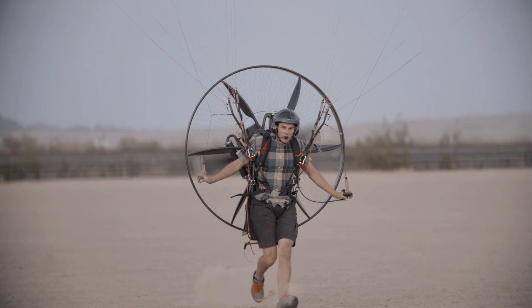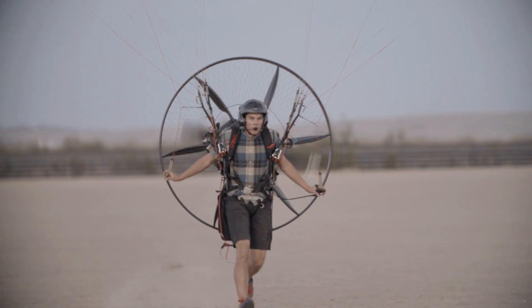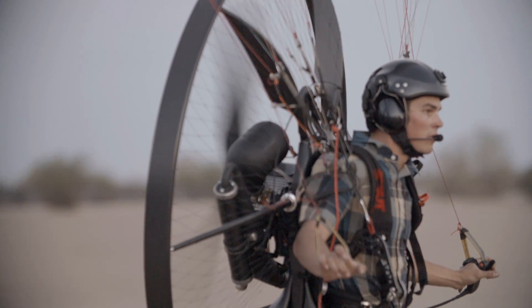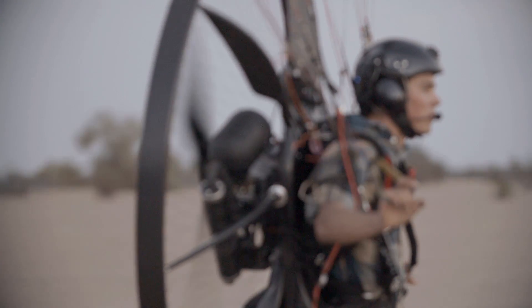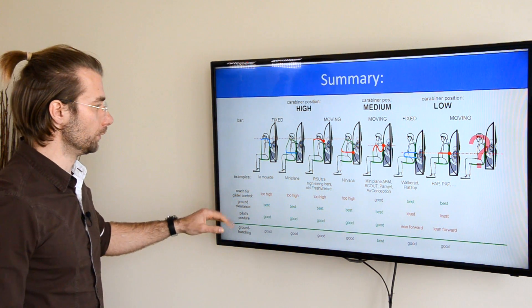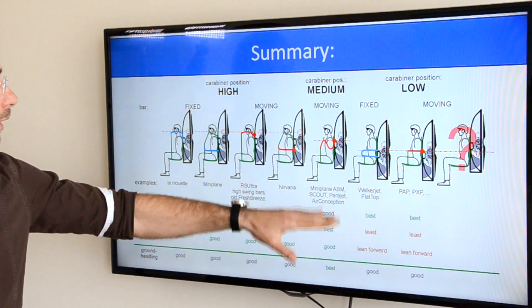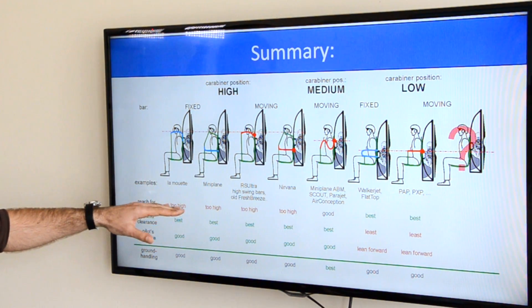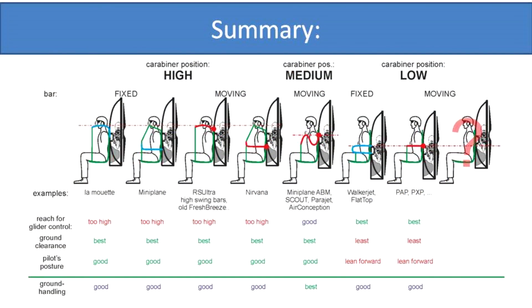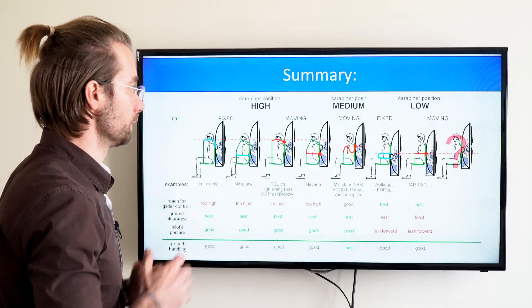So let's do the final summary. Now we have a traditional lineup of our suspension systems. Reach for the glider control is the best with low suspension, good with the medium, and the glider controls are too high with the high suspension systems. Now this is pretty important—reaching for glider control is crucial for takeoff. Ground clearance: the best with high suspension and medium, as the paramotor is positioned pretty much in the same level.